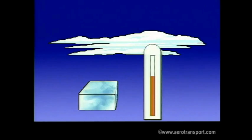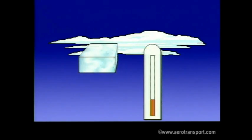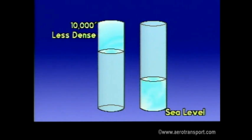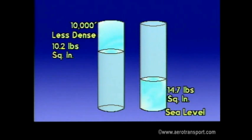As altitude increases, air pressure decreases. Looking at the two columns of air, one at sea level and the other at 10,000 feet, notice the column at 10,000 feet has less air in it, therefore less density and a lower air pressure. As a matter of fact, the air pressure at 10,000 feet is 10.2 pounds, or a drop of four and a half pounds.